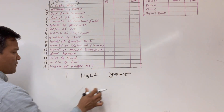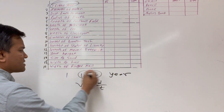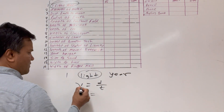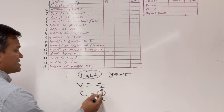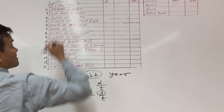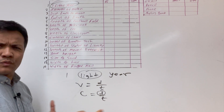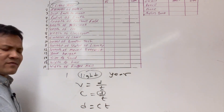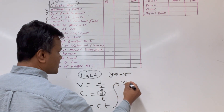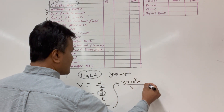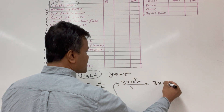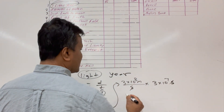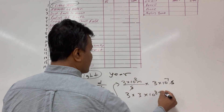One light year: velocity is distance over time. For light, there is a special notation C, the speed of light. C equals D over T. From the reference table, C is 3×10⁸ meters per second, and T is 3×10⁷ seconds per year. The seconds cancel, giving 3 times 3 times 10 raised to 8 plus 7 meters.